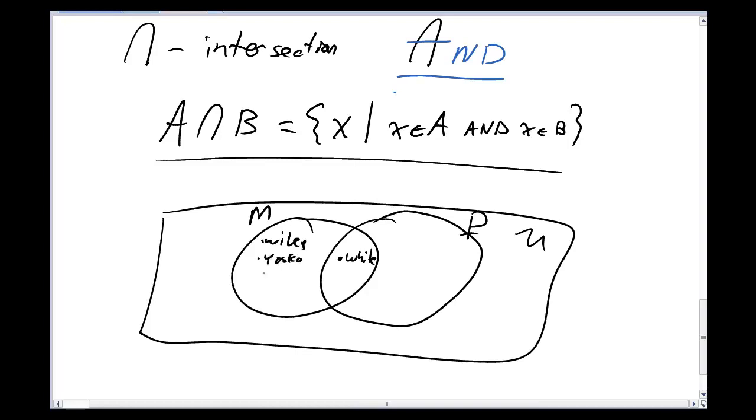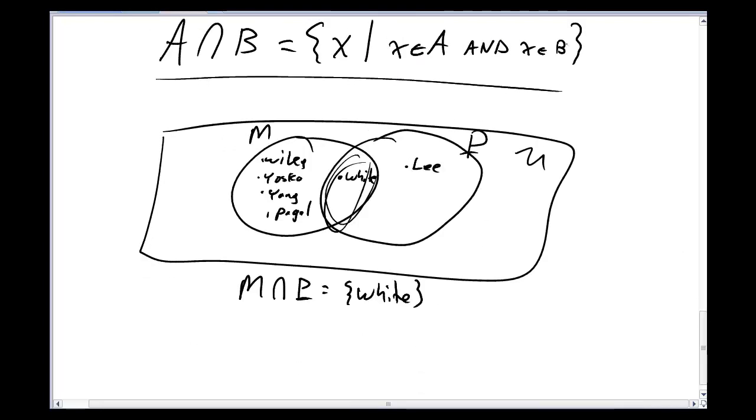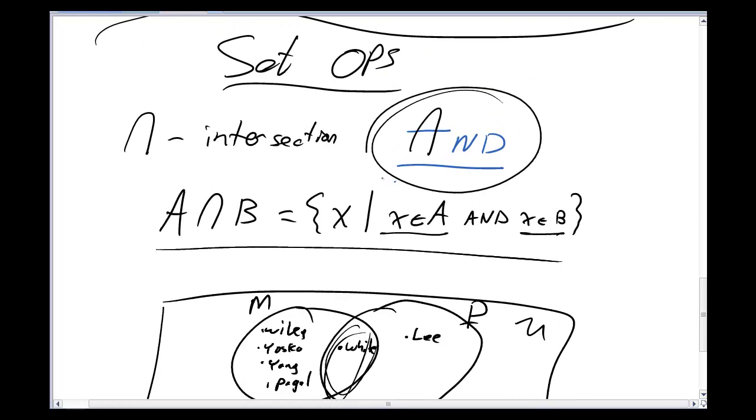I've got Mr. White here in the middle of both. We've got Wiley, Yasko, Yang, and Poggle over here who are only math people. And I've got Mr. Lee over here who's only a physics people. And so when I say M intersect P, what I mean to get out of this is the set that only holds Mr. White. He's the guy in this common ground here in the middle. And what I mean is that Mr. White is a member of the math department and he's a member of the physics department.